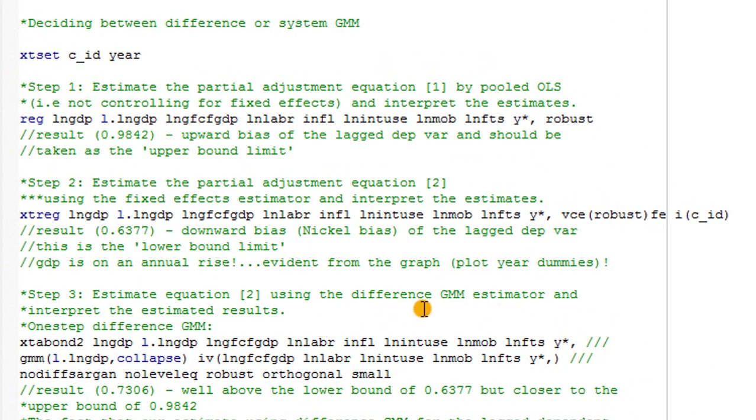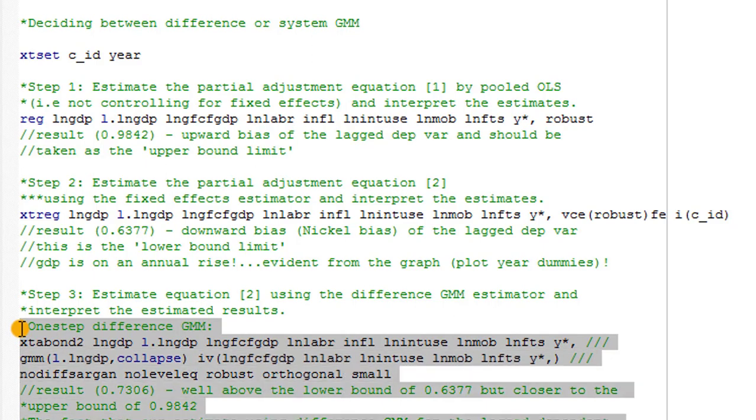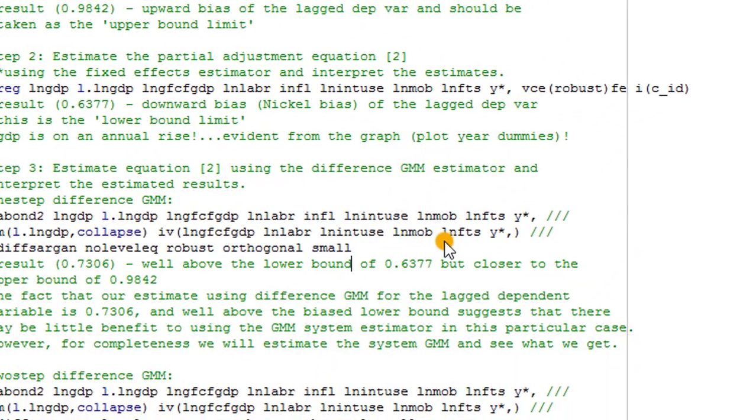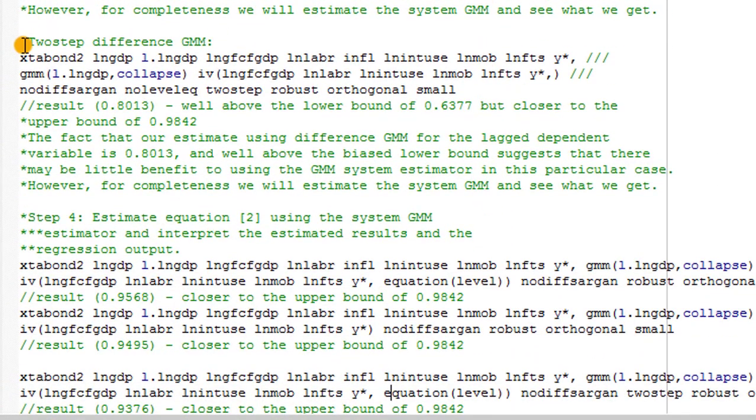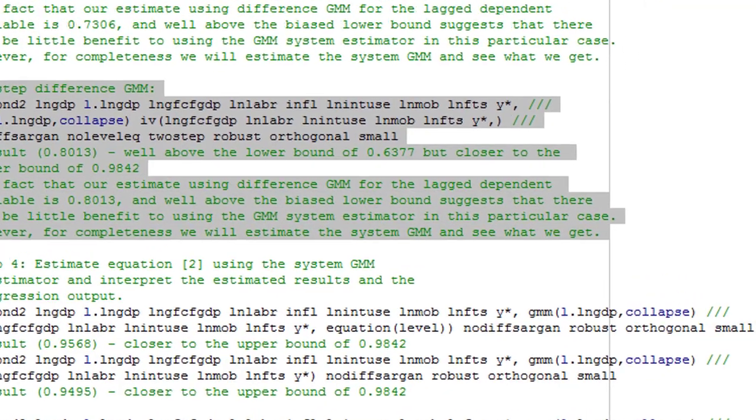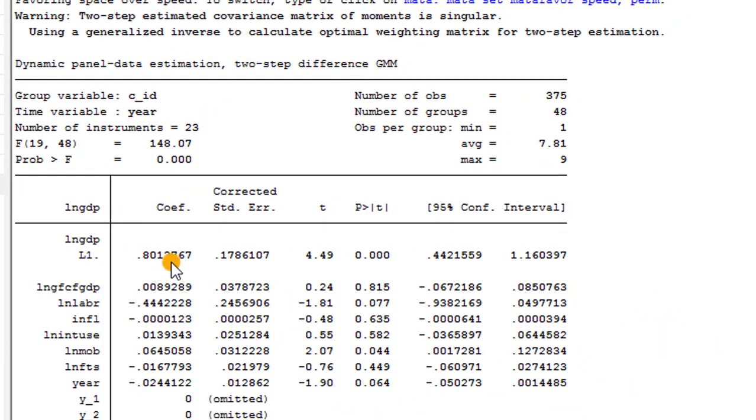So let's run the third one now. We have to estimate that same model using Difference GMM, so we are going to use one-step and two-step difference. So let's execute the one-step difference and let's observe the outcome. This is the output for the one-step difference. You can see at the top of the table here, one-step difference. And again, this is our coefficient of interest, the value is 0.7306. Make sure you note this. So lastly, let's execute the two-step Difference GMM command for the same model and observe the results. Consider the top of the table, two-step difference, and this is the coefficient that we are interested in, 0.8012.